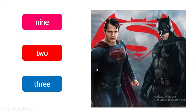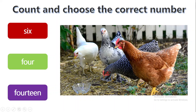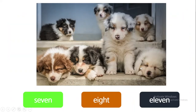And look at these balloons. How many balloons? 1, 2, 3, 4, 5, 6, 7, 8, 9, 10, 11, 12, 13, and 14. There are 14 balloons. Good job. And how many chickens here? There are 4. And the next one, how many dogs here? 1, 2, 3, 4, 5, 6, 7. There are 7 dogs.